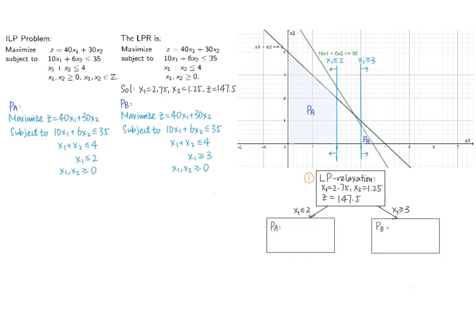The figure shows the feasible regions for P_A and P_B respectively. Although we no longer consider points with x1 between 2 and 3, we will not miss any ILP solutions because those points don't have integer x1 values. The optimal point of the ILP problem is still contained in either the feasible region of P_A or P_B.